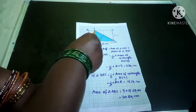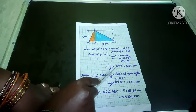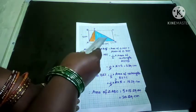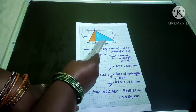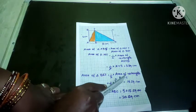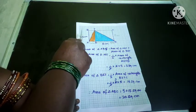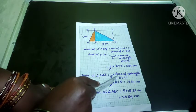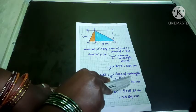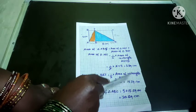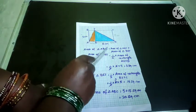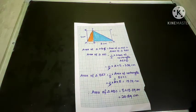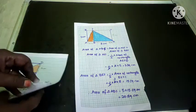Now for triangle BEF: this is half of rectangle BEFC. Area of triangle BEF is equal to half of area of rectangle BEFC. Length is 6 centimeters — counting 1, 2, 3, 4, 5, 6 — and breadth is 5 centimeters, since opposite sides are equal. Applying the formula: half into 6 into 5 — cancel 2 and 6 to get 3 — so 3 into 5 equals 15 square centimeters. Adding both areas: 5 plus 15 equals 20 square centimeters.